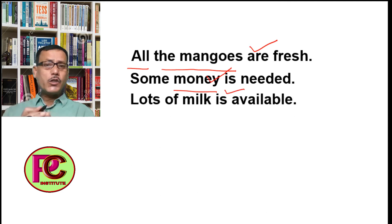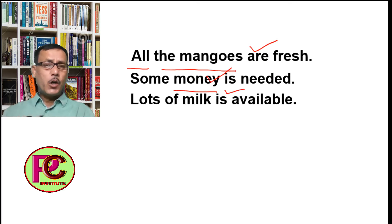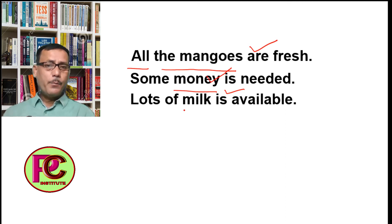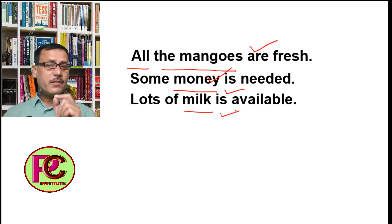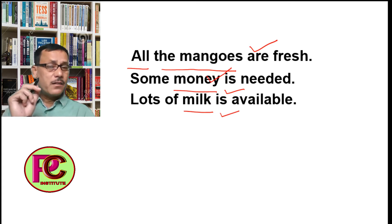'Lots of milk is available.' Here, after 'lots of', the word 'milk' is used, which is an uncountable noun. Therefore the verb that comes will also be singular, because the subject of the sentence is singular.